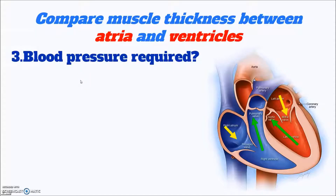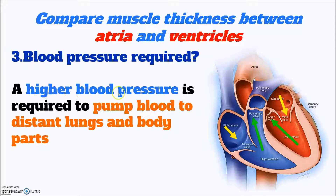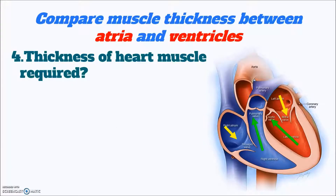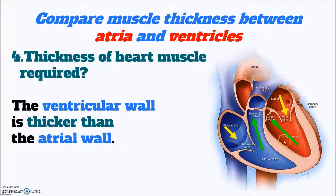After we talk about the distance, we know that a higher blood pressure is required to pump the blood to the distant lungs and body parts — through the aorta and the pulmonary artery. The ventricles need a higher blood pressure than for pumping to the adjacent ventricle. The atria only pump the blood to the adjacent ventricle — a very short distance — so they don't need a very high blood pressure. Therefore, the ventricle wall should be thicker than the atrial muscular wall.